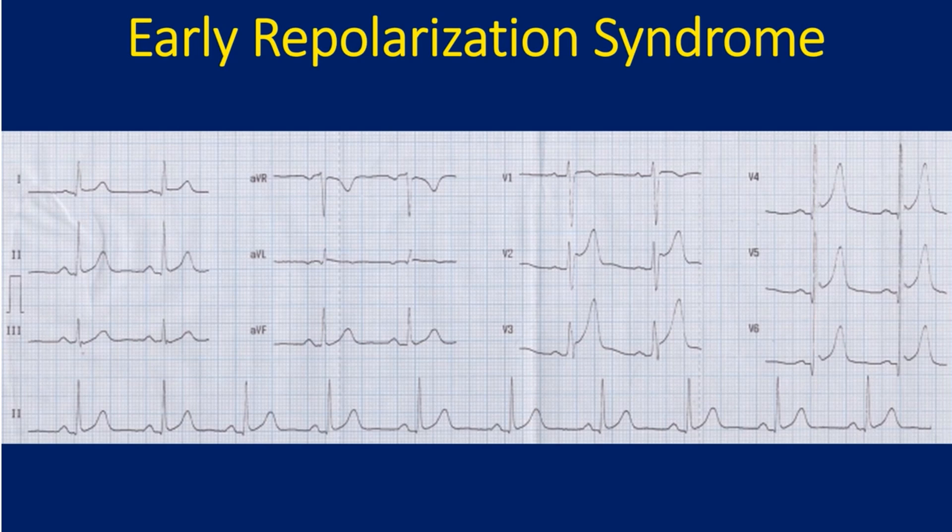The ECG pattern of ERPS can be abolished by exercise or atropine, which increases the heart rate. Potassium administration may also abolish the change. But these methods are not to be adopted in a person with suspected acute coronary syndrome.